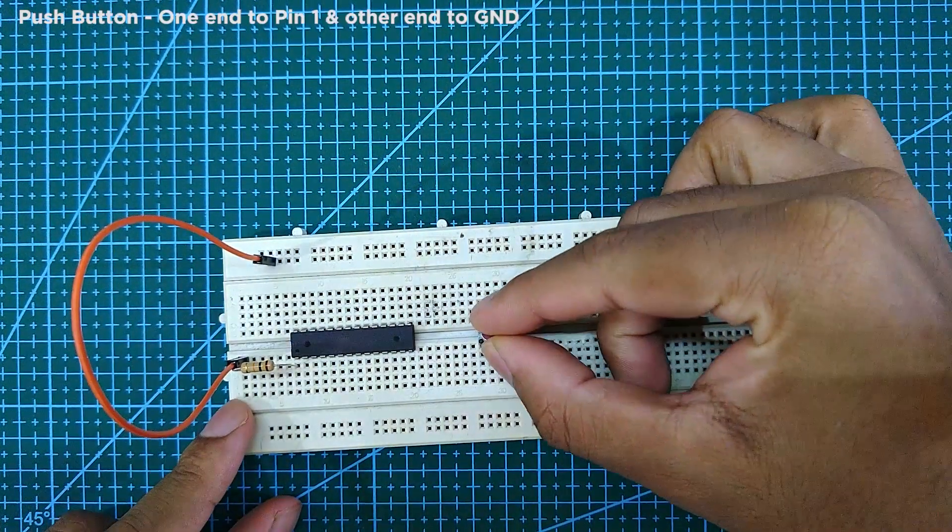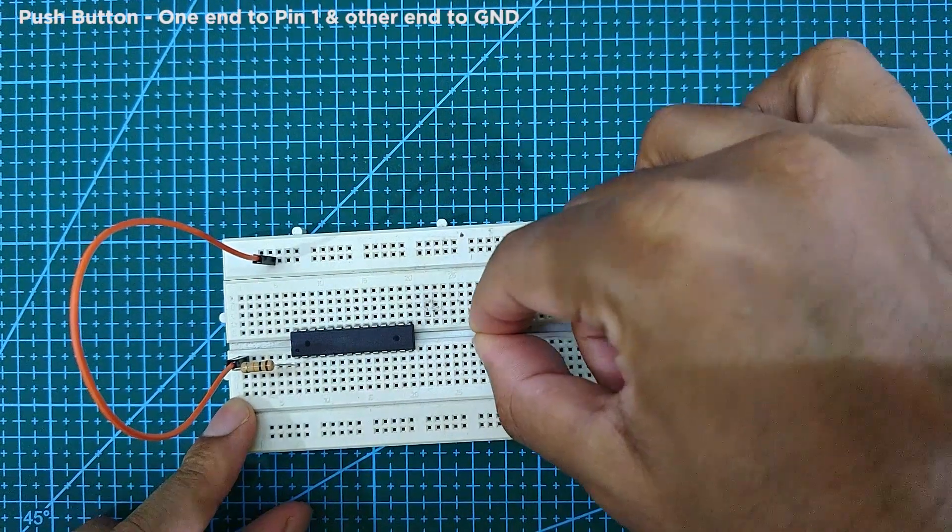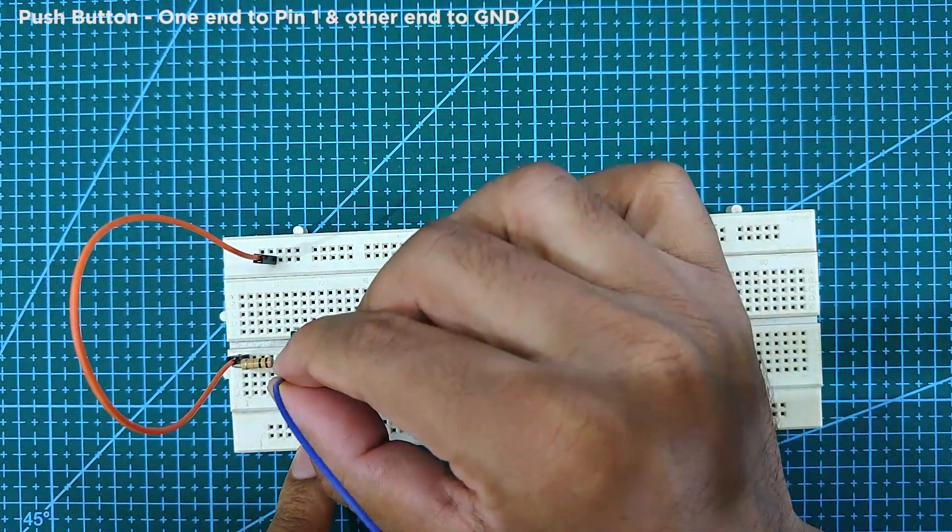Next, mount a push button and connect one end to pin 1 of the ATMEGA 328P and the other end to ground.